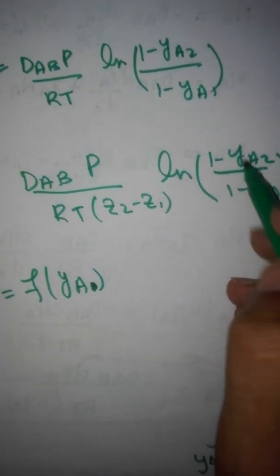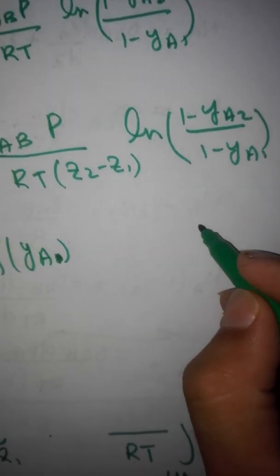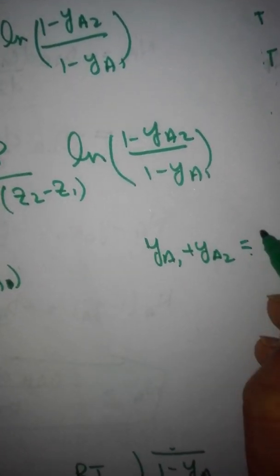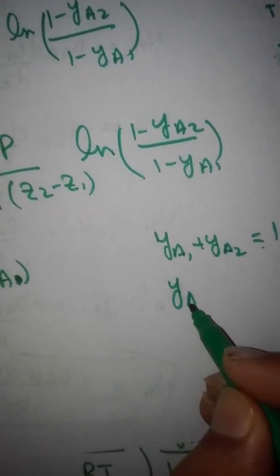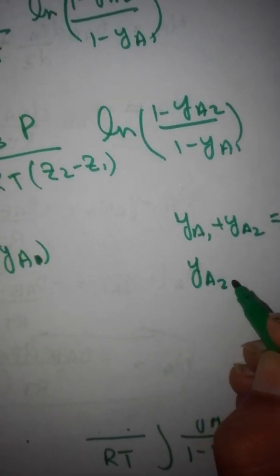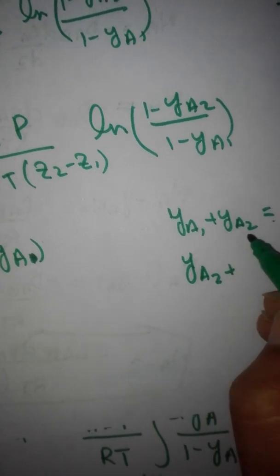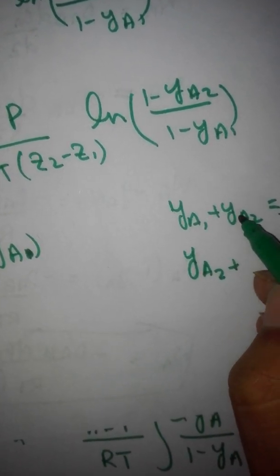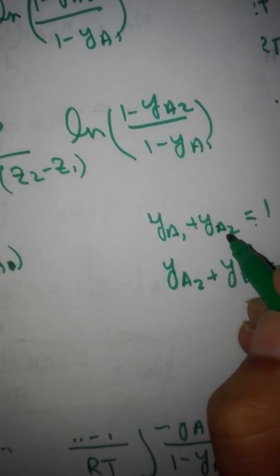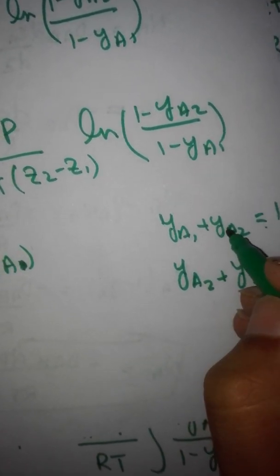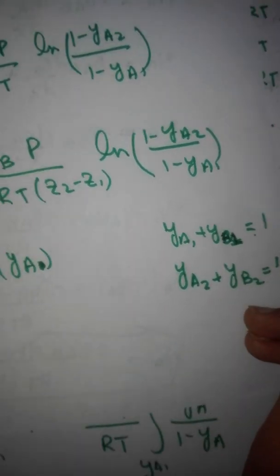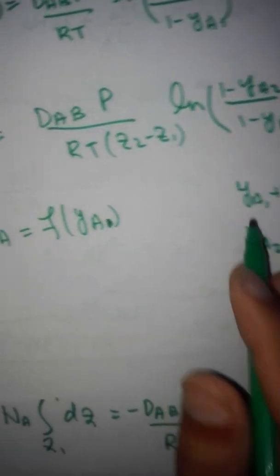We can also write: YA1 plus YB1 equals 1, so 1 minus YA2 equals YB2, and 1 minus YA1 equals YB1. So the flux equation can also be written in terms of the mole fractions of component B.